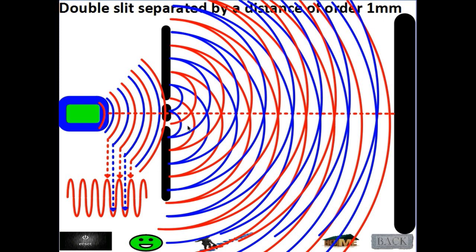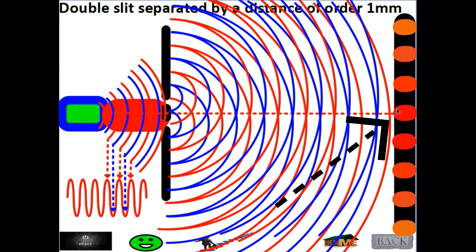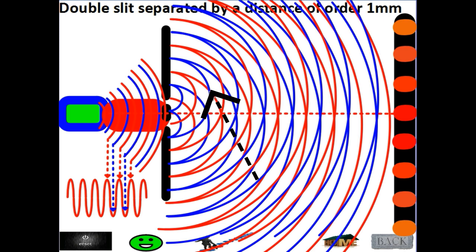We can see crest-trough intersections in the pattern. Where crests meet crests and troughs meet troughs, this is constructive superposition and we get a bright fringe. Where we see intersections of blue and red — crest meeting trough — we get minimum or zero amplitude, destructive superposition, and we get a dark fringe.